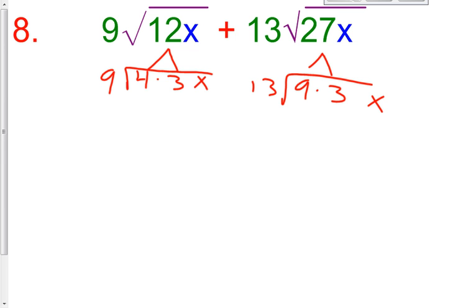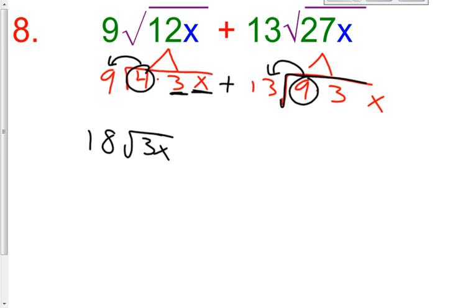So, what can you take out of our radical signs? You can take out a 4 to make it a 2, and then 2 times 9 is 18. So, you have 18 times the square root of 3x. This 3 and this x has to stay inside. What can you take out of this radical sign? The 9 can be taken out to make a positive 3. And so, 13 times 3 is a positive 39. So, you have plus 39 times the square root of 3x.